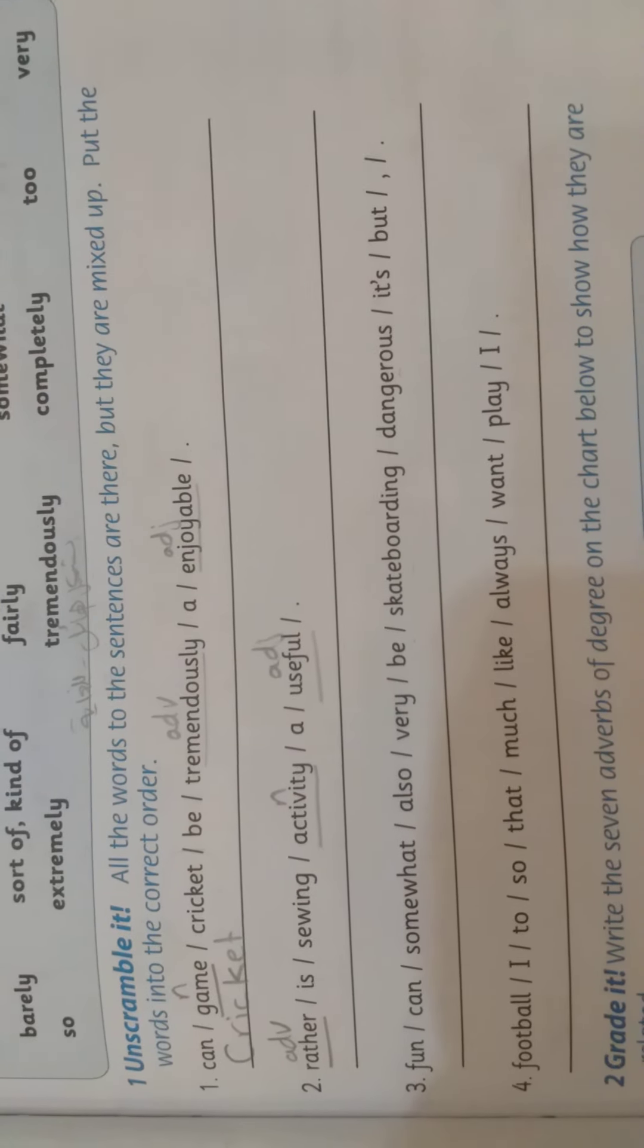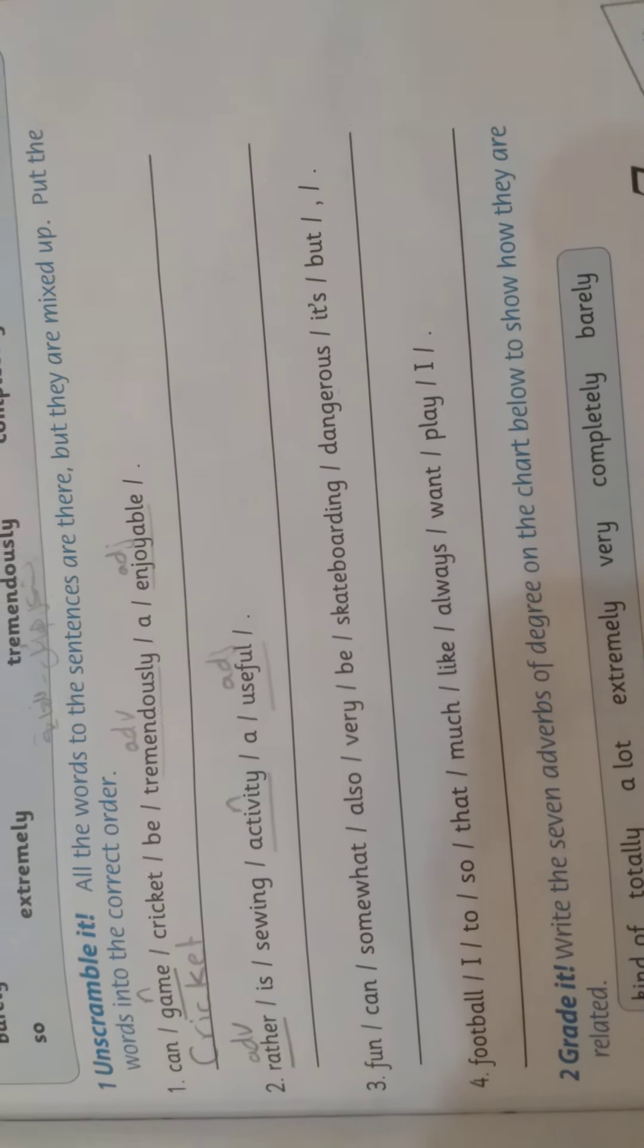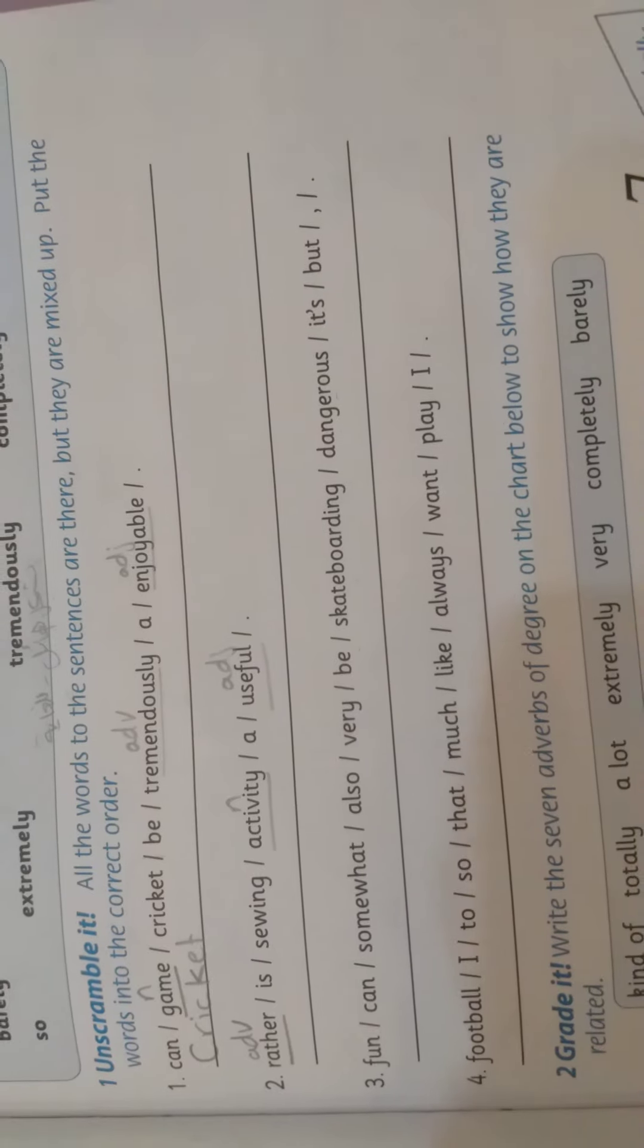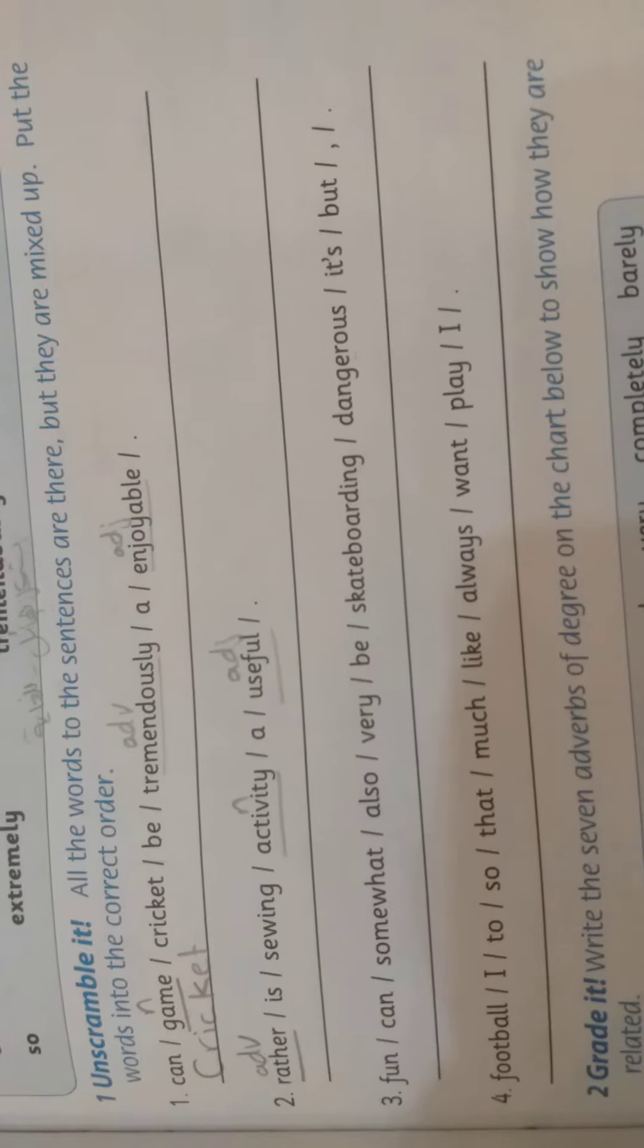As you know, the sentence in English has to start with a subject, then a verb. After that, you complete the sentence. الجملة باللغة الإنجليزية لازم تبدأ بـ subject اللي هو الفاعل، then a verb بعدين فعل، and after that you complete the sentence.